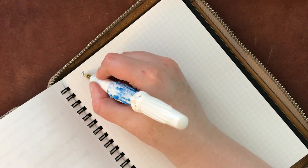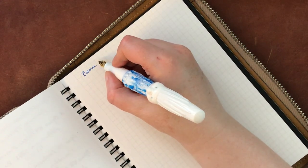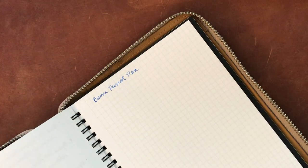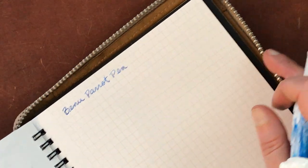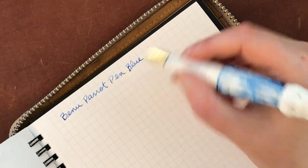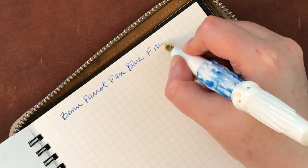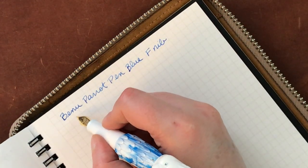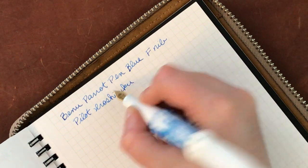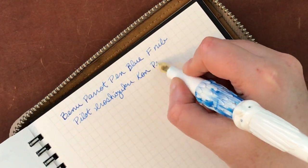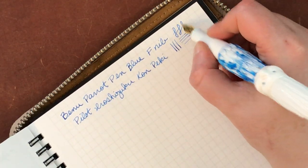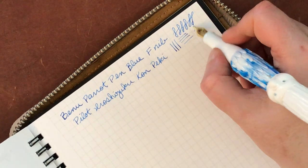So this is a Bennu parrot pen. Let's get in there even further so you can see. In blue. And this is a fine nib, I believe. And then the ink in here is Pilot Iroshizuku Konpeki. And there's not really any line variation because it's just a standard fine nib. You can hear it against the paper.